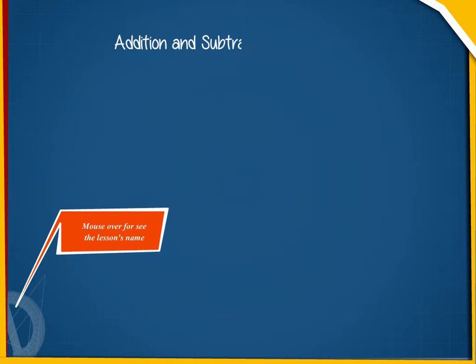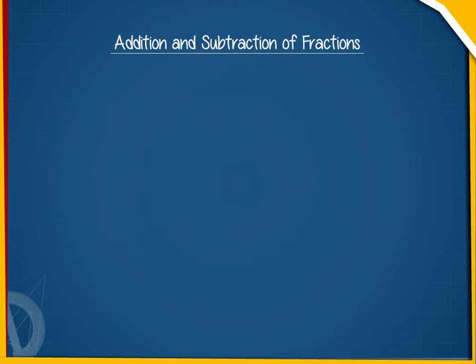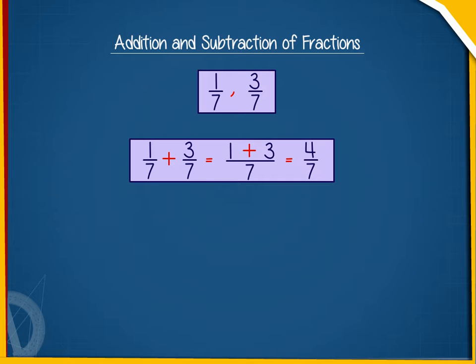Addition and subtraction of fractions. Let us add two like fractions, 1 by 7 and 3 by 7. For this, we will add the numerators only, as the denominators are same. It will remain the same.